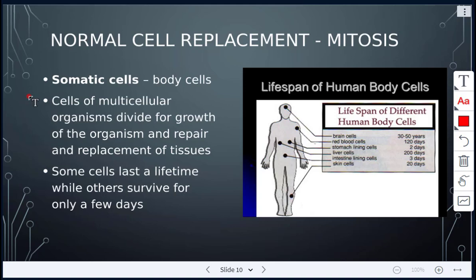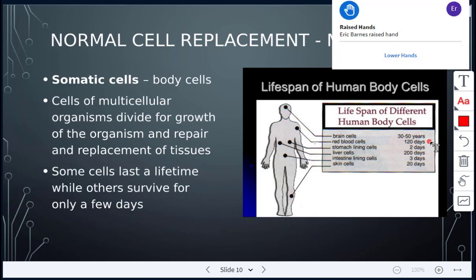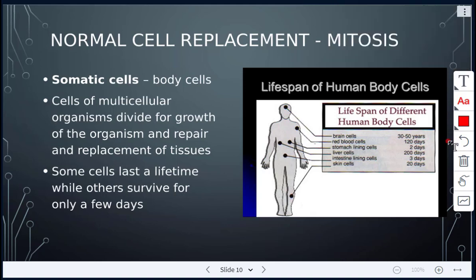Some cells can last a lifetime while others only survive for a few days. Looking at this diagram of the lifespan of different human body cells: brain cells survive about 30 to 50 years, red blood cells about 120 days, stomach lining cells are replaced every two days, liver cells every 200 days, intestinal lining every three days, and skin cells every 20 days.